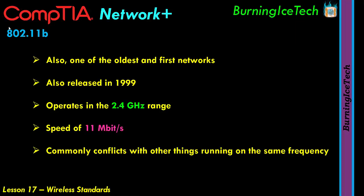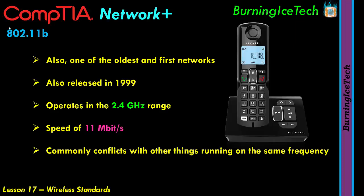Other devices that also operate at 2.4 gigahertz include cordless phones — not cell phones or mobile devices, but those phones that have a charging base, where you pick them up to make or receive a call. They've got a line plugged into the charging base, kind of looks like an old walkie-talkie. Those cordless phones run at 2.4 gigahertz.